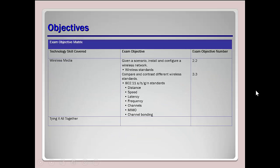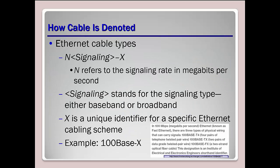We'll get started with understanding the way that we label cables. The format is N signaling X, where N refers to the signaling rate in megabits per second. Signaling stands for the signaling type — either baseband or broadband — and X is the unique identifier for the specific Ethernet cabling scheme.